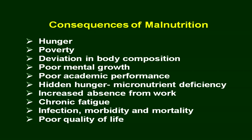Let us see what can happen — the consequences of malnutrition: hunger, poverty, deficiency, deviation in body composition, body weight, body height, and poor mental growth. The child is not able to grow properly, which may not be visible at the earlier stages but is very much reflected when the child goes to school, where they show poor academic performance. Hidden hunger means micronutrient deficiency — your stomach is full, you are not hungry, but your body is hungry.